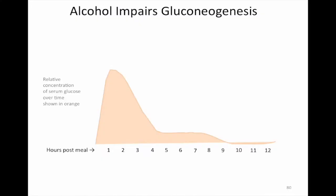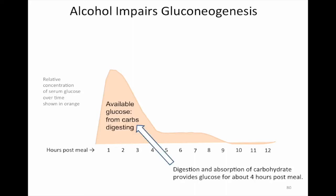This slide will explain how alcohol impairs gluconeogenesis. In orange is the relative glucose concentration, both after eating and then between meals. So for the first four hours, you usually have glucose available from the meal that you ate. The highest blood sugar is one to two hours after the meal. By about the fourth hour, you're done digesting your food.